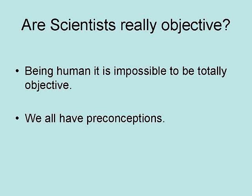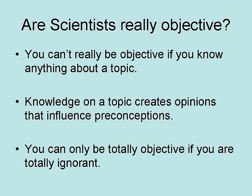So is science really objective? Well, being human, it is impossible to be totally objective about anything because we all have preconceptions about the world around us. The fact is you cannot really be objective if you know anything about a topic, because knowledge on a topic creates opinions that influence preconceptions. So you can only be totally objective if you are totally ignorant. This is why juries are selected from people who know little or nothing about the case.